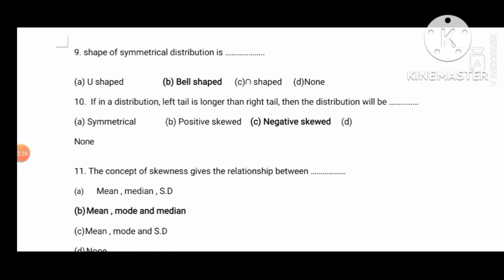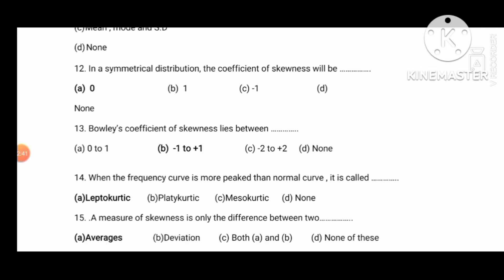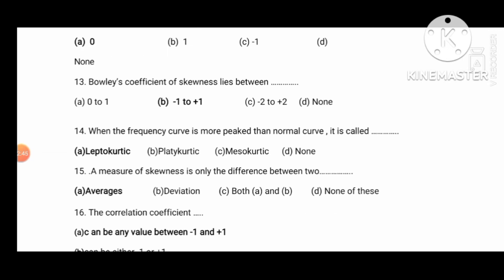The next question: the concept of skewness is about the relationship between mean, mode, and median. In a symmetrical distribution, the coefficient of skewness will be zero. The coefficient of skewness lies between minus 1 to plus 1. When the frequency curve is peaked, then it is called a normal curve.